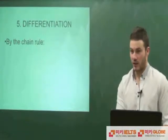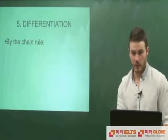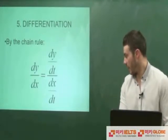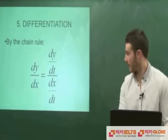which we learned a few lessons ago, if you remember the chain rule. The chain rule states that dy by dx is equal to dy by dt over dx by dt. And this is how we differentiate parametric equations.